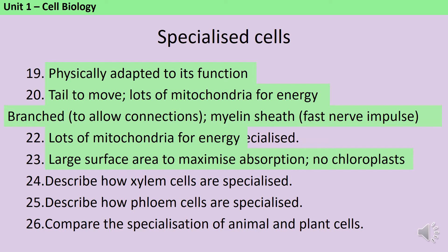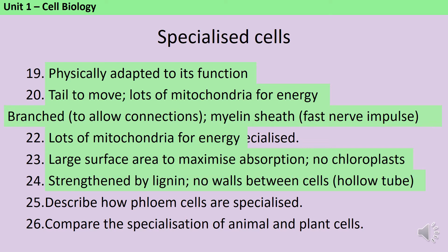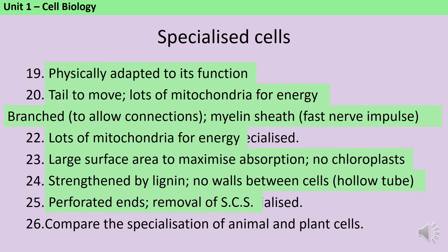The xylem are strengthened by a woody substance called lignin and there are no walls between the cells, so the whole xylem is a hollow tube. Phloem cells have perforated ends — what we call the sieve tube elements — to allow the movement of substances from cell to cell. Often they don't have lots of mitochondria and instead have a companion cell alongside that provides them with the extra energy they need.